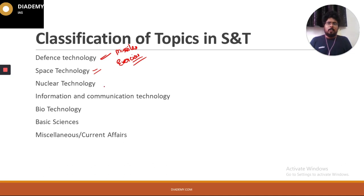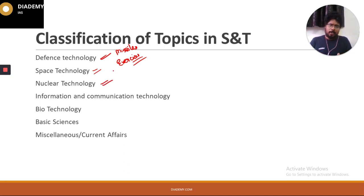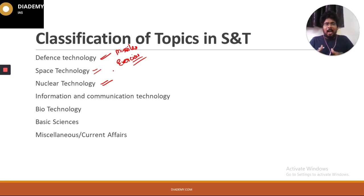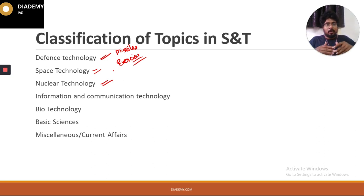After space technology, we have nuclear technology. Here we will focus mainly on nuclear processes like fission and fusion, India's nuclear policy, nuclear technologies, and nuclear reactors.